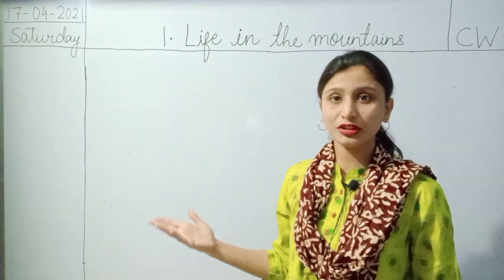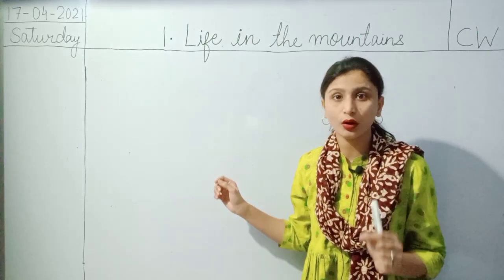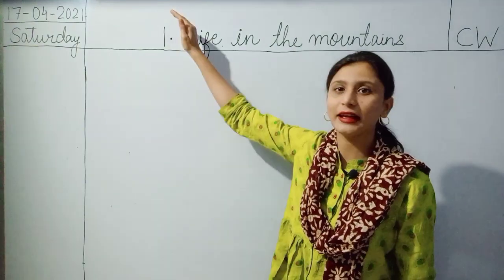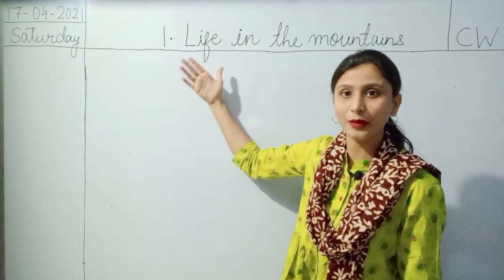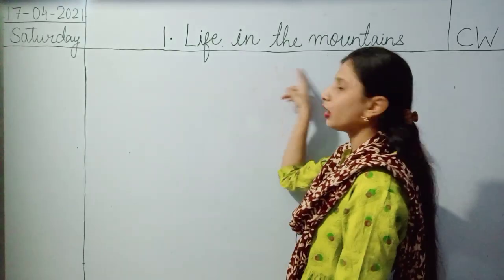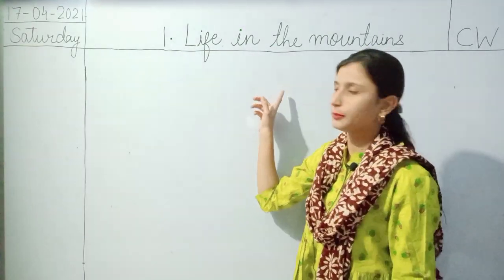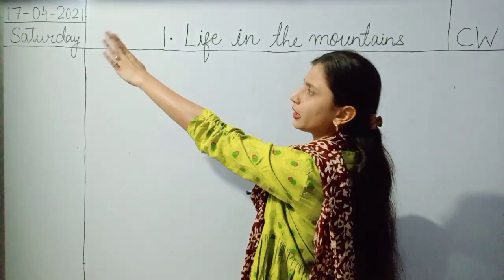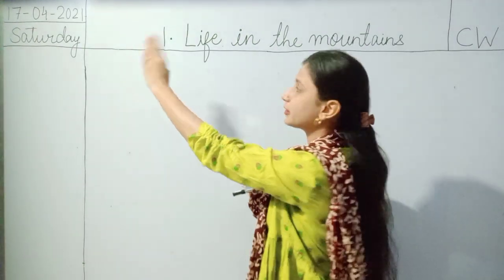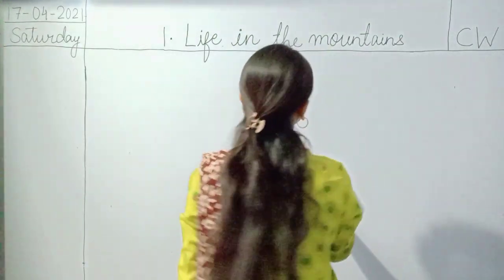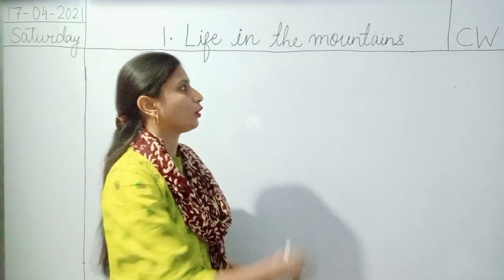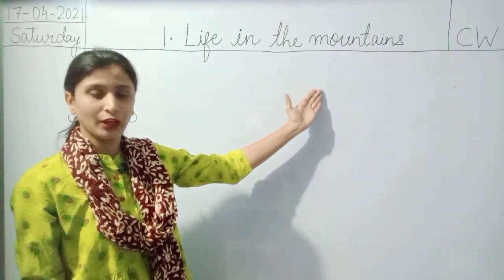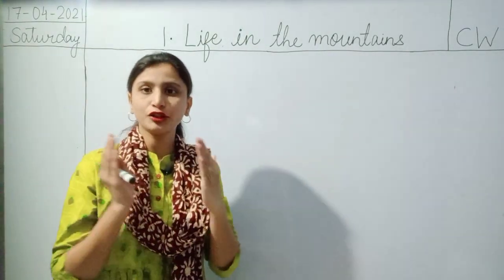Before starting, let me remind you that you are going to draw the format. The old students already know they are going to leave two lines from the above margin, then draw a line, write the name of the topic on that. On your left hand side you are going to write the date as well as the day. Today is 17th April 2021, it's Saturday, and this is the CW — classwork — which we are doing right now, so I will write CW over there and the name of the topic here.